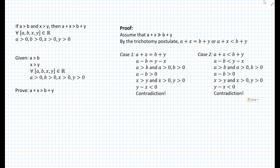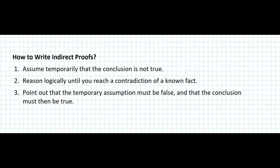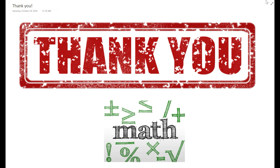Now that we've reached a contradiction in both cases, we can say that the initial assumption that A plus X is not greater than B plus Y is false. Therefore, A plus X must be greater than B plus Y. To review: first, temporarily assume the conclusion is false; second, reason logically until you reach a contradiction of a known fact; third, point out that the temporary assumption must be false and the conclusion must be true. In the next lesson, I'll cover indirect proofs for geometric shapes involving triangle inequalities. Thanks for watching and have a wonderful day.